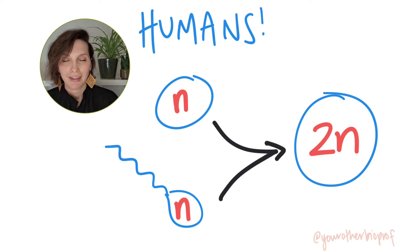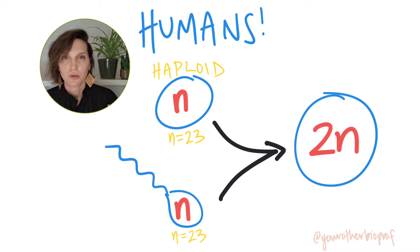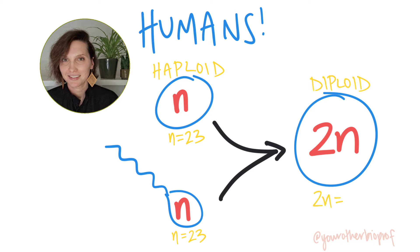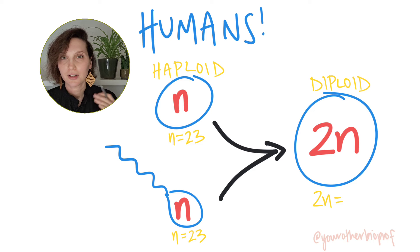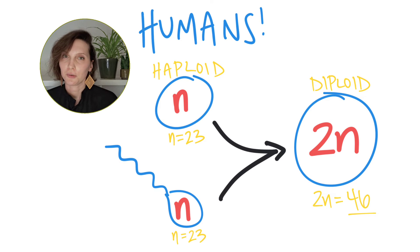In humans, the haploid number n is equal to 23. So how many chromosomes would be present in the somatic cells? Two n equals 46 — two copies, two versions of each of 23 different chromosomes. Two times 23 is 46.